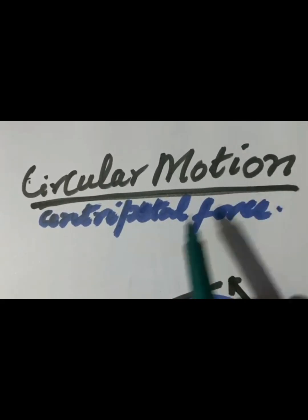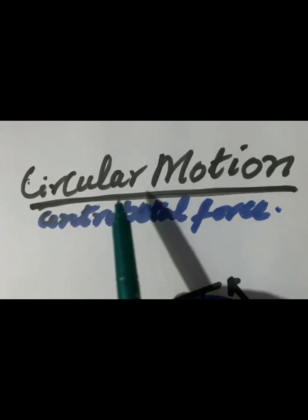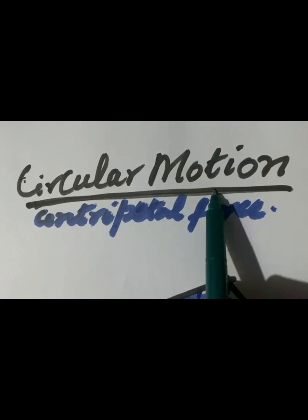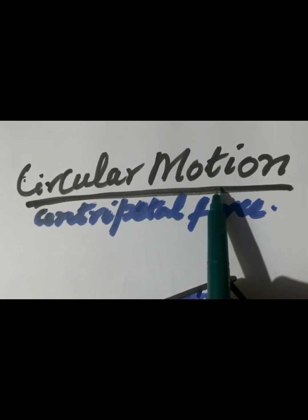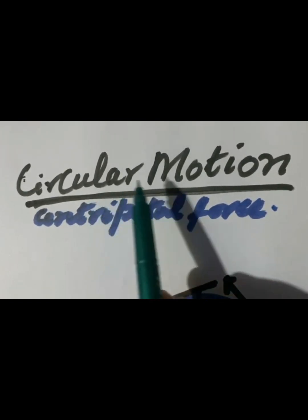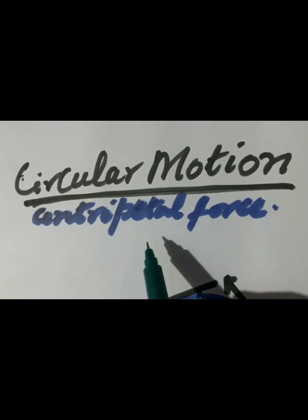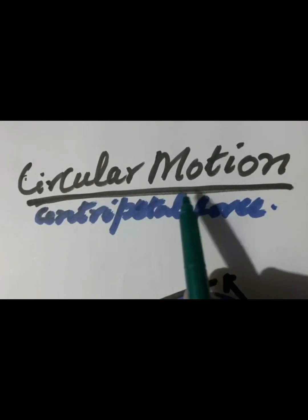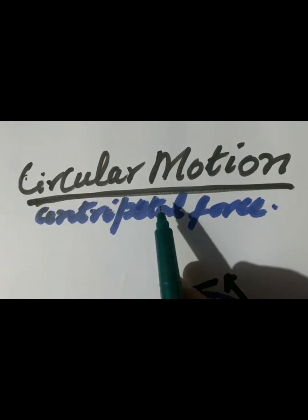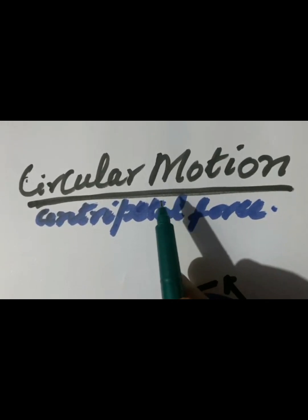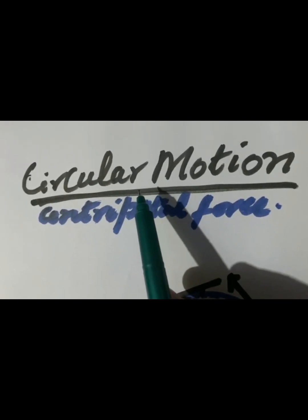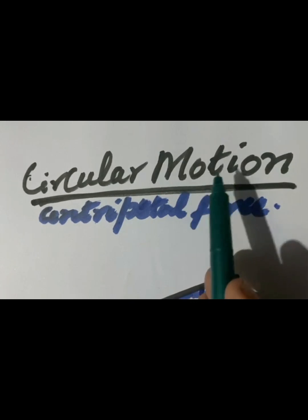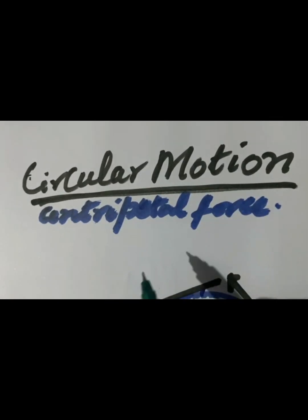What is circular motion? If a body moves in a circle, it is termed as circular motion. Uniform circular motion: if a body is moving with constant speed, it is said to be uniform circular motion.